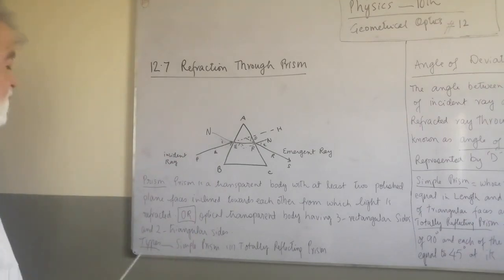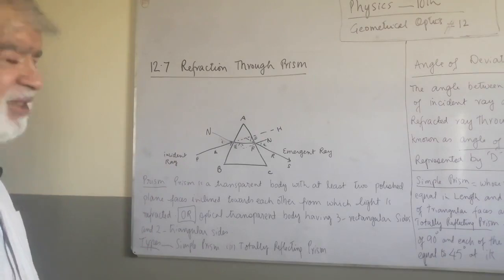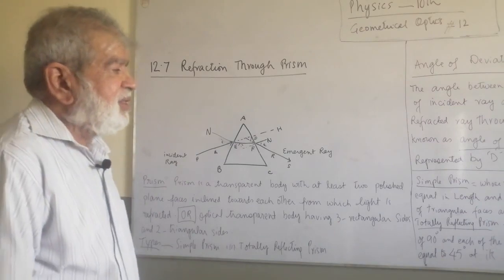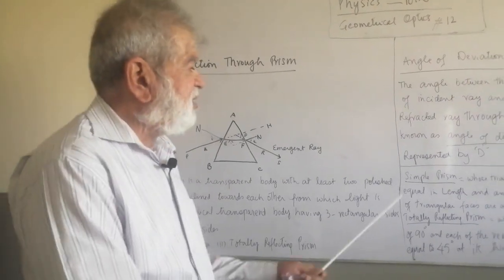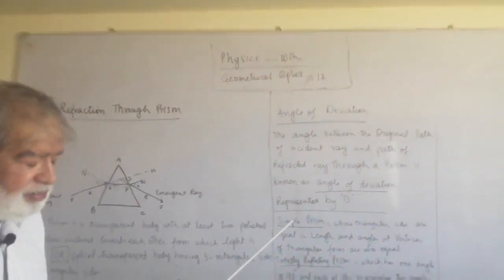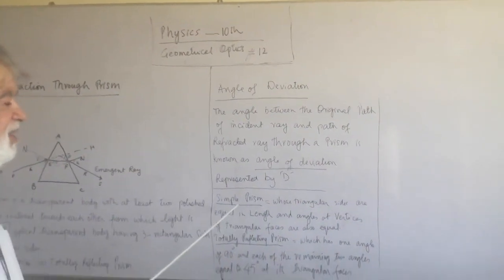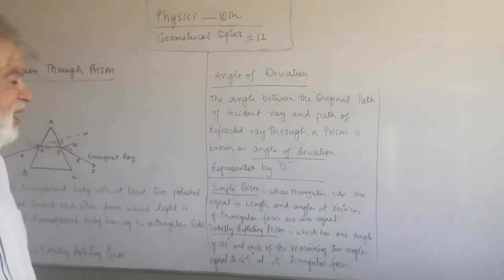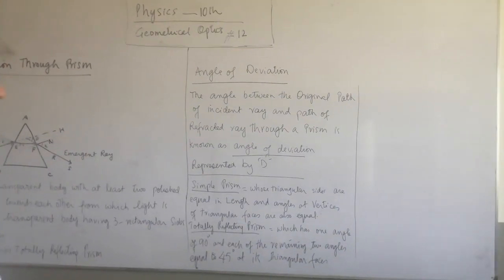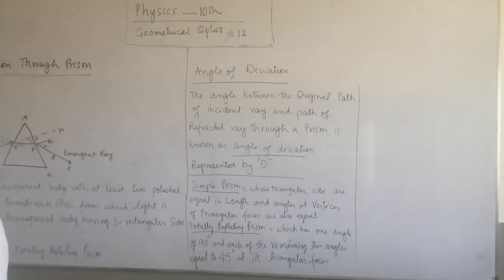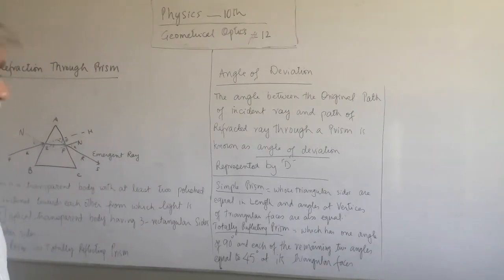Now what are the types of prisms? There are two types of prisms: one is a simple prism, the other is totally reflecting prism. Learn these definitions. What is a simple prism? A simple prism is one whose triangular sides are equal in length and angles and vertices of triangular faces are also equal.